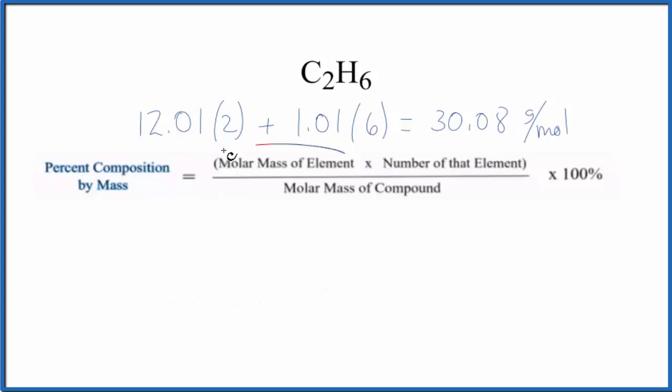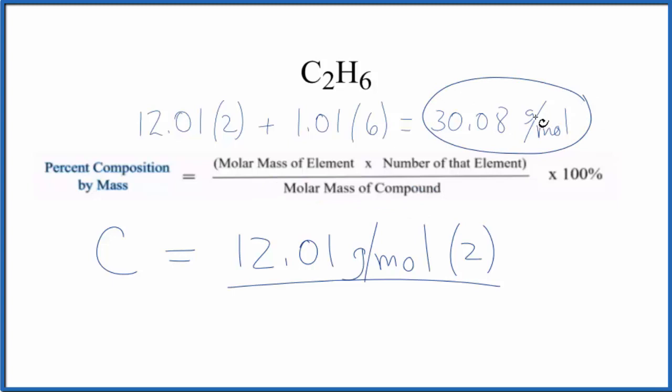Now let's do each element. We'll start with carbon. Carbon on the periodic table has a molar mass, or atomic mass, of 12.01 grams per mole, and the number of the element, that's the subscript here, is two carbon atoms. We divide that by the molar mass of the compound, which is what we figured out before.